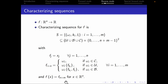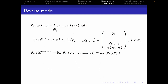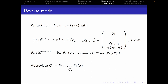We know that f(x) equals f_{n+m}. If f_{i+n} has this form, then f(x) clearly has this form — you can convince yourself of that. In the following, we'll abbreviate gi as fi composed with all the functions in between down to f1 of x. This is f1 all the way down to f_{n+i}, our sequence f1 to f_{n+i}.